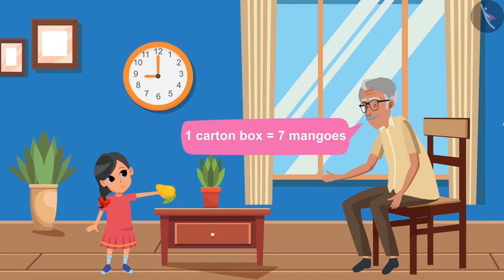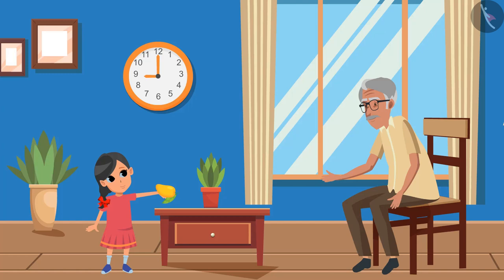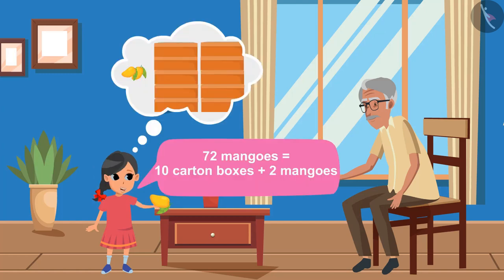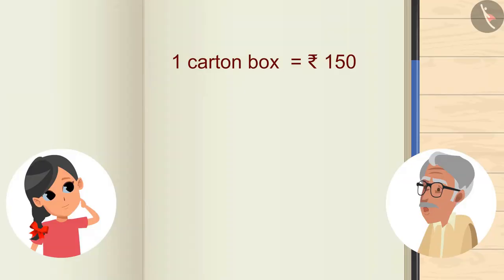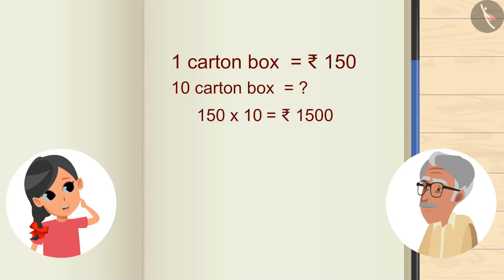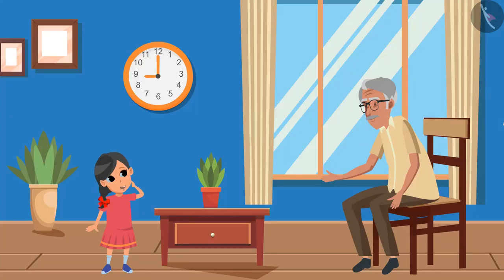We have seven mangoes in this carton box. Yes, I remember it, Grandpa. We have packed mangoes in 10 carton boxes. So if the price of one carton box is 150 rupees, then what will be the price of ten carton boxes? It will be 150 times 10, so the price will be 1500 rupees. Absolutely right!